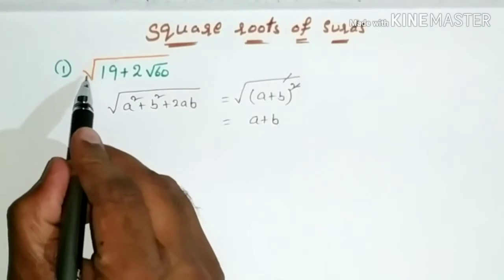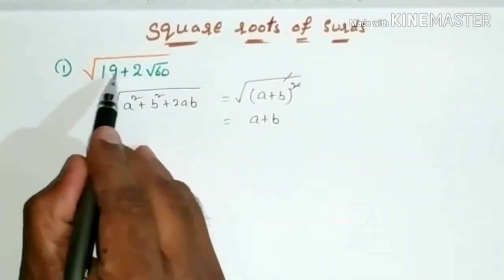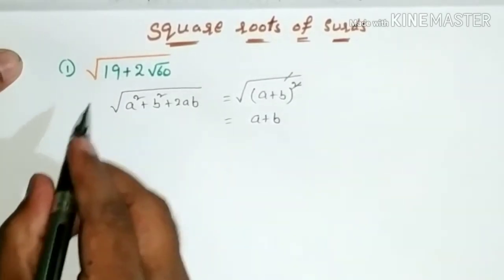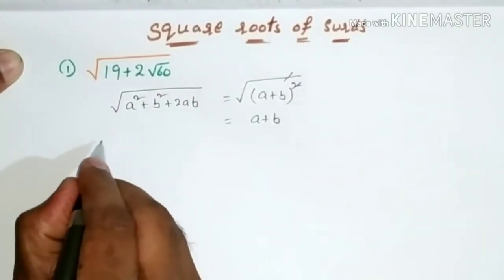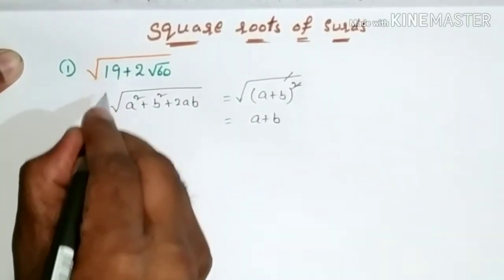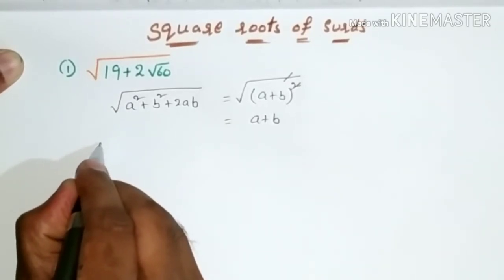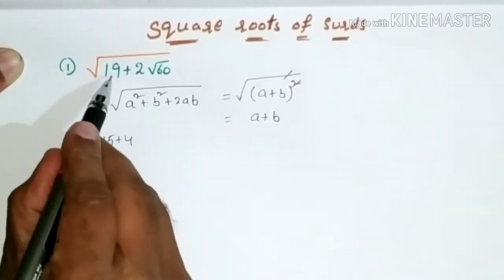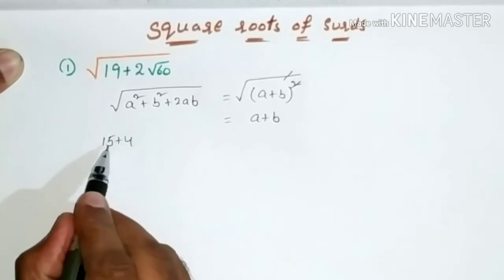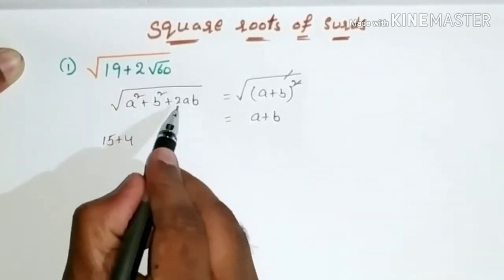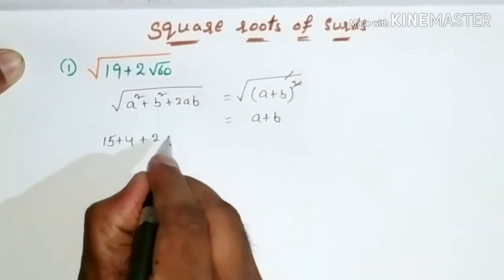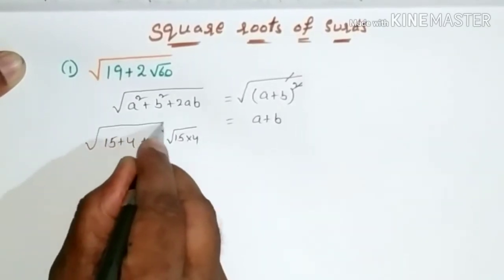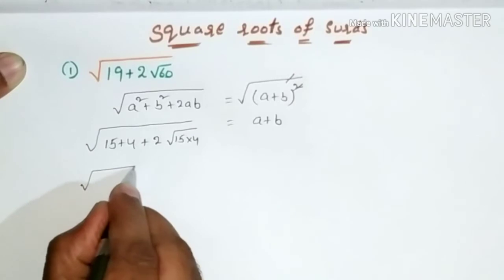Similarly, we have to find the square root of 19 + 2√60. We need to write this in the form a² + b² + 2ab. The first term, 19, is the sum of two numbers: 15 + 4. And when you multiply them, you should get 60, since 15 × 4 = 60.